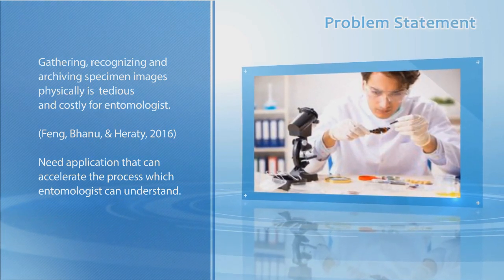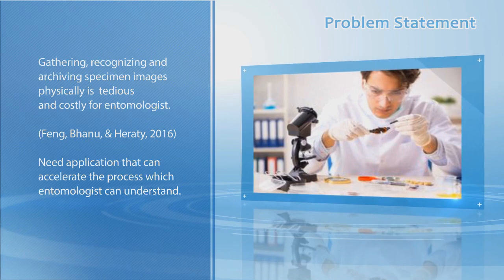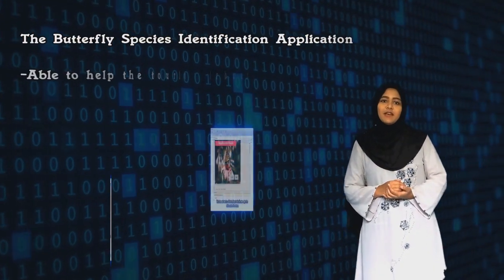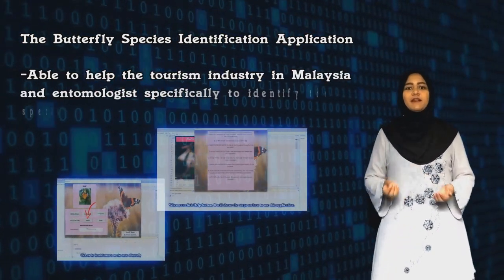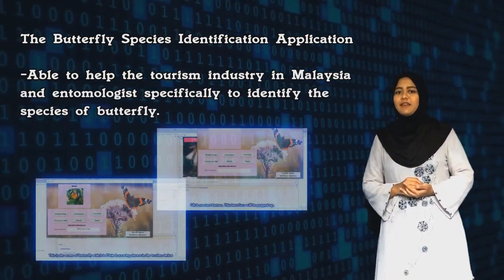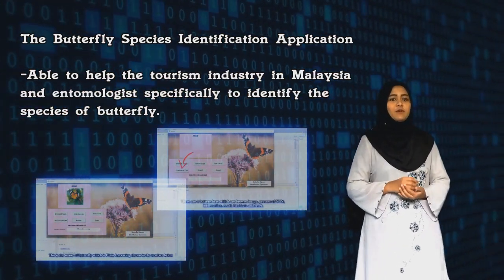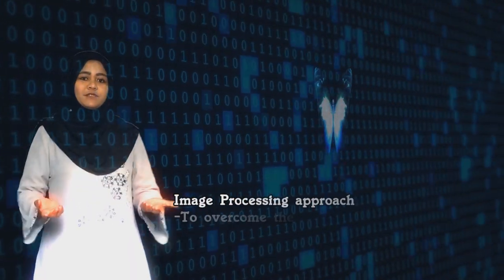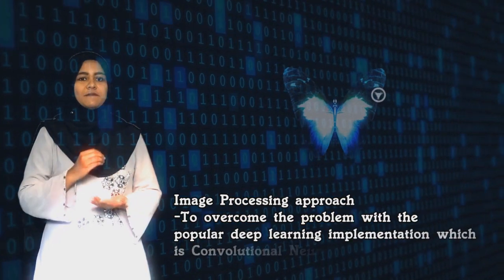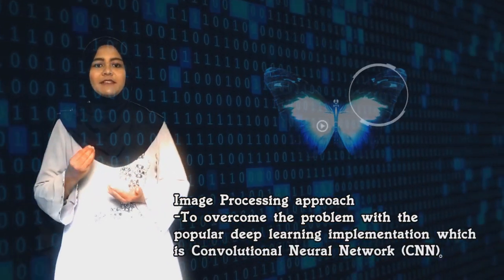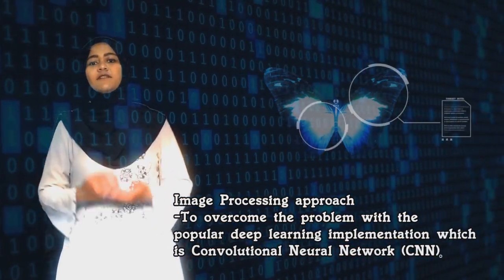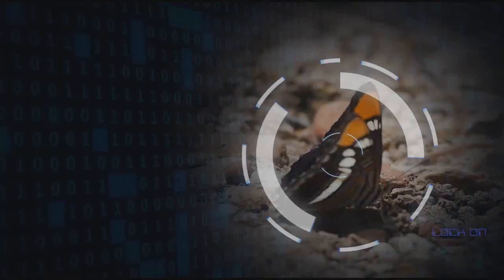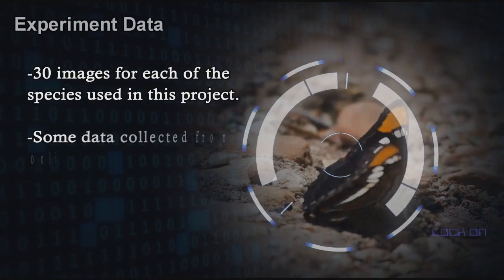There is a need for an application that can accelerate the process which entomologists can understand. The butterfly species identification application will be able to help the tourism industry in Malaysia and entomologists specifically to identify the species of butterfly. An image processing approach has been introduced to overcome the problem, using the popular deep learning implementation which is Convolutional Neural Network, CNN. There are 30 images for each of the species used in this product.